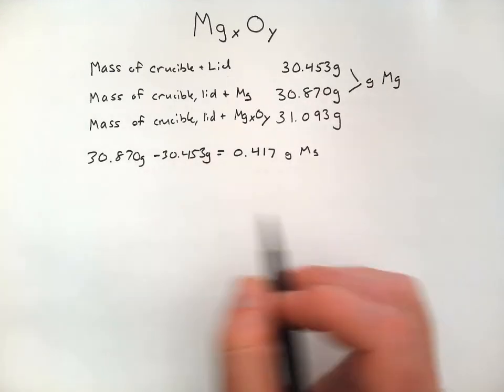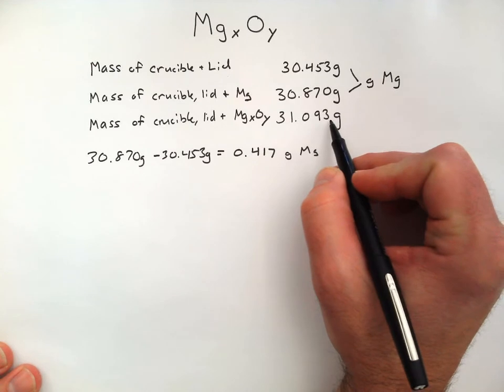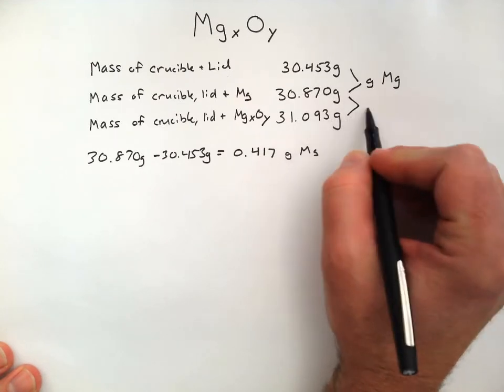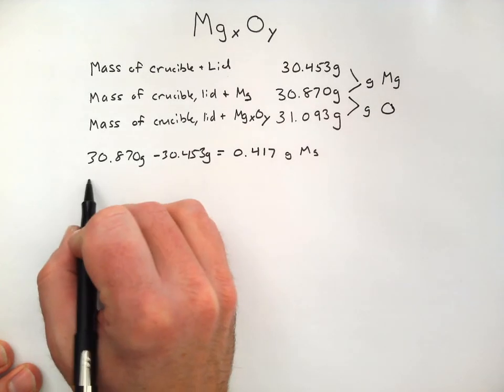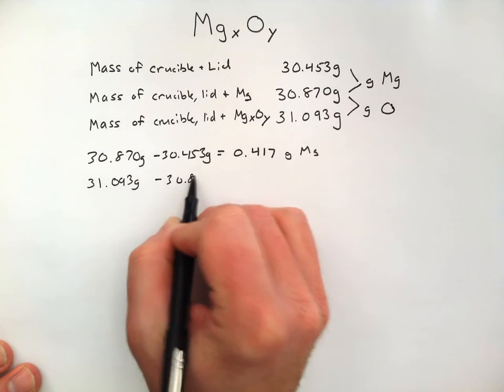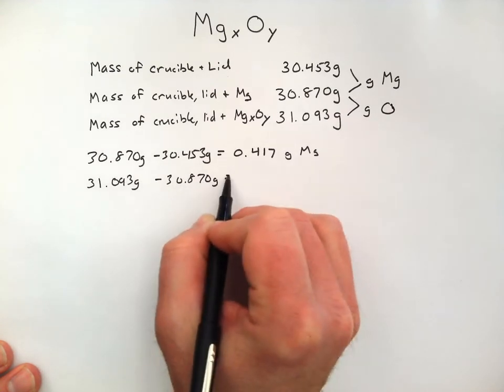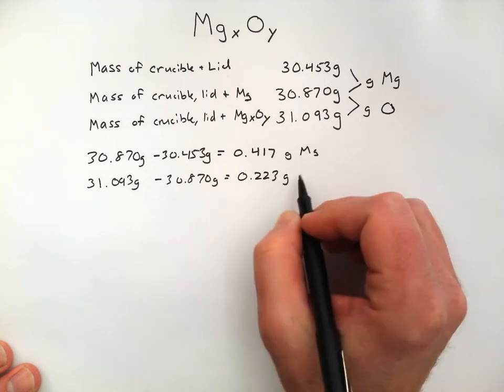We'll do the same thing for the oxygen. Now, the oxygen appeared between this mass and this mass, and so the mass again went up. I'll write it out, 31.093 grams minus 30.870 grams, and I get a mass of 0.223 grams of oxygen.